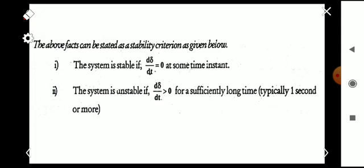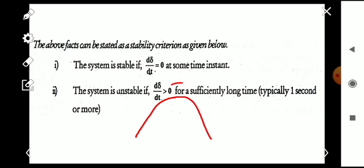These two conditions can be written mathematically. The stability criterion is: the system is stable if d delta by dt equals zero at some time instance. That is, at the maximum point of the delta curve, the rate of change of delta is zero — delta is increasing and then decreasing — so if we find a d delta by dt equal to zero condition, the system is stable.